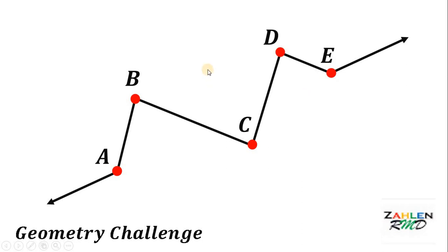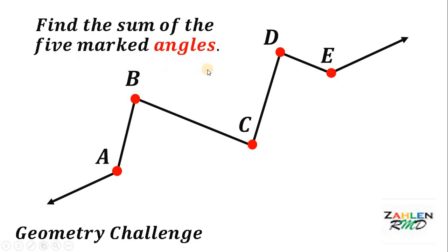Now, the question is, find the sum of the five marked angles. Namely, angle A, angle B, angle C, angle D, and the last is angle E.